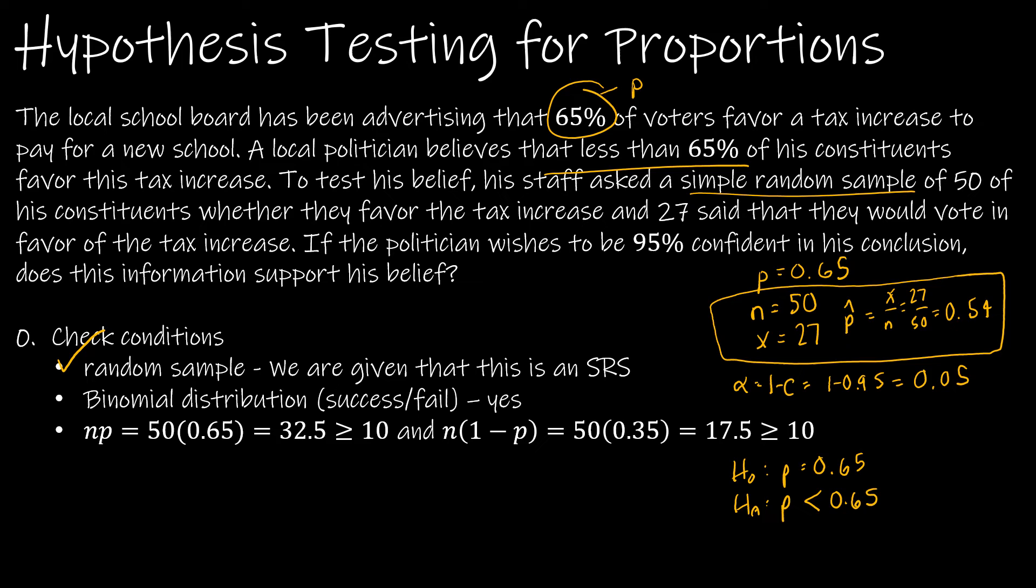We've already checked the random sample condition. Binomial distribution, yes, it's a success-fail because they either want to vote in favor of the tax increase or they do not. And there is a set number of trials because there's only 50 trials. Then we have to check that np and n(1-p) are greater than or equal to 10. So n is 50, p is 0.65, giving us 32.5 and 17.5. Conditions are met.